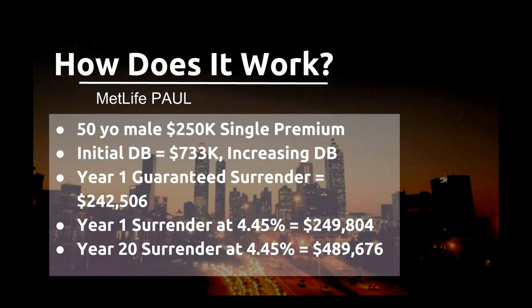Using the same example — a 50-year-old male puts in $250,000 as a single premium. The initial death benefit is $733,000, also an increasing death benefit. The guaranteed surrender charge value at end of year one is $242,000. There's a small penalty for the cost of insurance, but at end of year one with the 4.45% rate, they have $249,000. At end of year 20, they'd have $489,000. This is a great alternative, particularly when compared to other safe dollar investments.